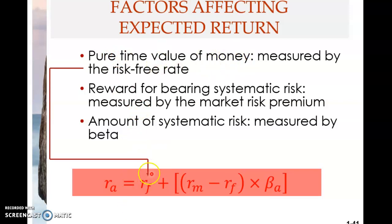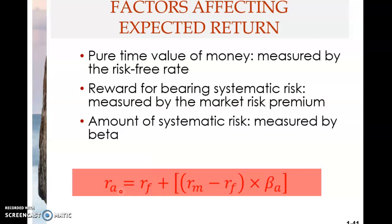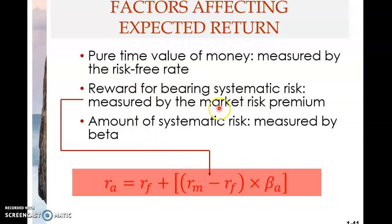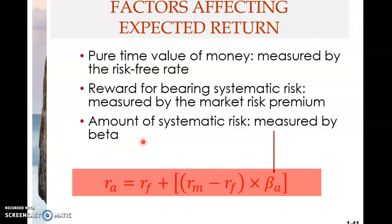The second factor is the reward for bearing systematic risk, which is the market risk premium Rm minus Rf. Higher this market risk premium, higher the required return. The third factor is the amount of systematic risk of the asset, measured by beta. Higher the systematic risk, higher the required rate of return. These three factors — Rf, the market risk premium, and beta — determine the required return of any asset or investment.